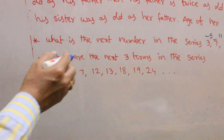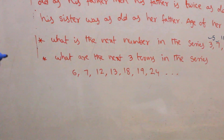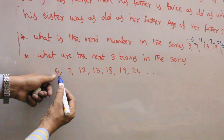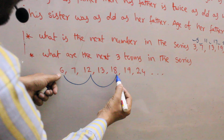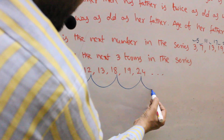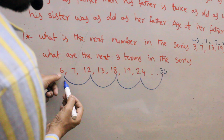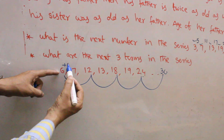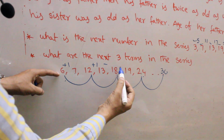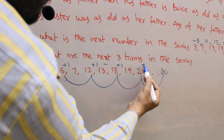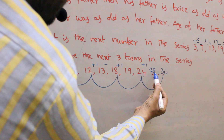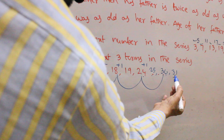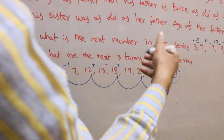Coming to the next question: what are the next three terms in the series? This is a mixed series. The first sub-series is 6, 12, 18, 24 — the next term is 30, which is multiples of 6. Then the second sub-series adds 1: 6+1=7, 12+1=13, 18+1=19, 24+1=25, 30+1=31. So the next three terms are 25, 30, 31.